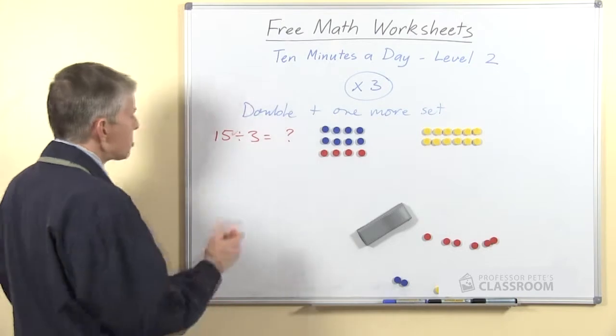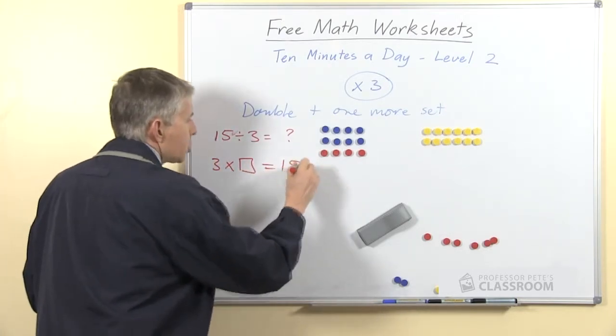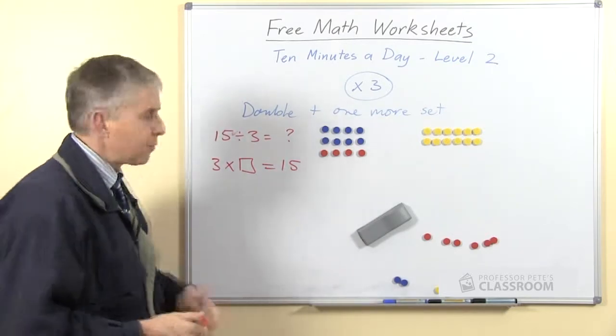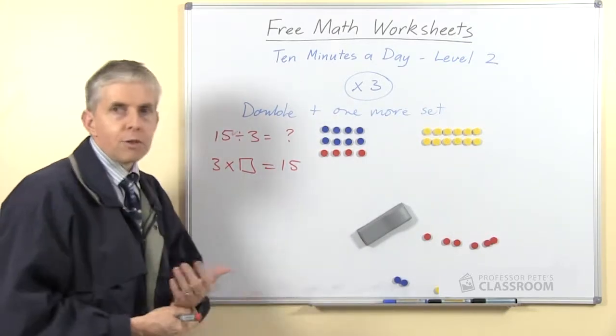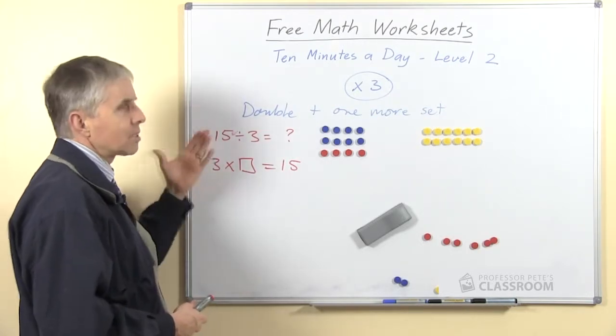Now it would be possible for a student to think through the sequence of multiples for 3 to come up with the right answer. So they could go: well, 3 times 1, 3 twos are 6, 3 threes are 9, 3 fours are 12.